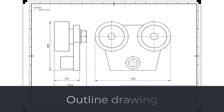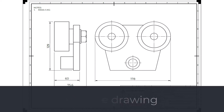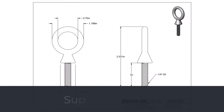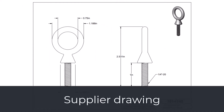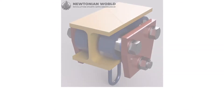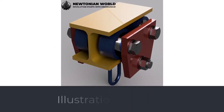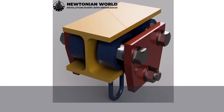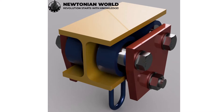The outline drawing gives the outside peripheral envelope, overall dimensions, and mass of an object. The supplier drawing defines a part developed and owned by an external supplier. Usually, the supplier drawings can be found on the supplier website, or you could contact the supplier to provide you with it. The illustration drawing shows figures and sketches for any general purpose not covered by the more specific document types. These could include figures for marketing purposes, figures for instruction manuals or work instructions, etc.